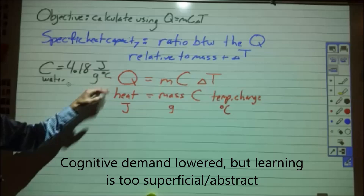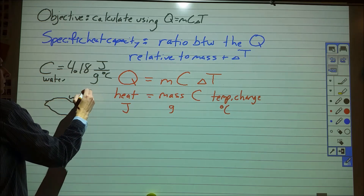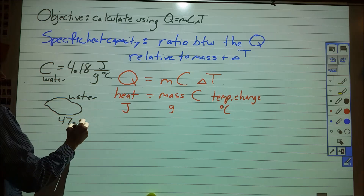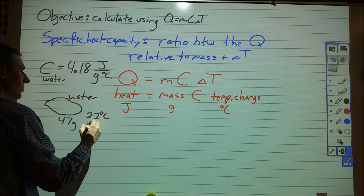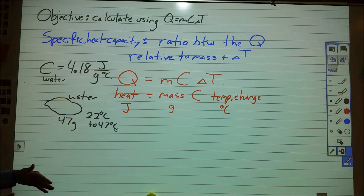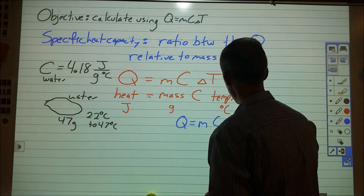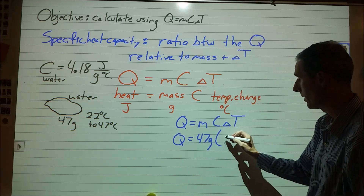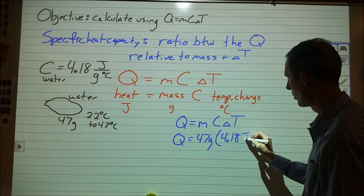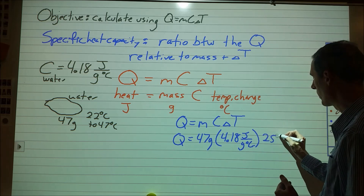Additionally, we want the per to be per one gram per one degree Celsius for the changes. So if we were to do a sample problem where we had 47 grams of water and wanted to heat it up from 22 degrees Celsius to 47 degrees Celsius, the way we would plug that in is to use our equation Q equals MCAT. We don't know Q, our mass is 47 grams, our specific heat capacity is 4.18 joules per gram per degree Celsius, and our temperature change is 22 to 47 — that's a change of 25 degrees Celsius.